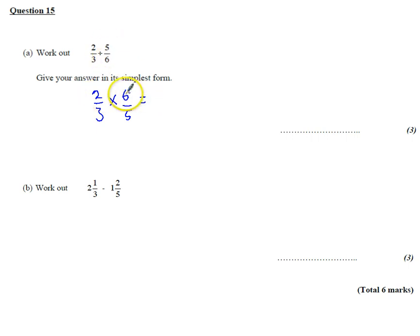And then it's easy, so we've got 2 times 6 is 12, 3 times 5 is 15. Give your answer in its simplest form. So 3 is the highest common factor for both of these. 3 goes 4 times into 12, 3 goes 5 times into 15.